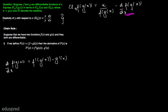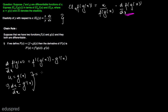In the question we are given that u is equal to g(x), which implies g prime of x is equal to the derivative of u with respect to x. Substituting these values gives us f prime of u multiplied by the derivative of u with respect to x.